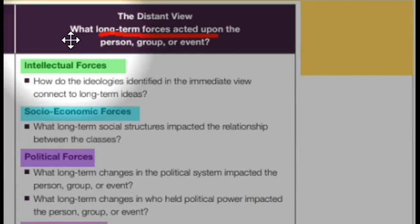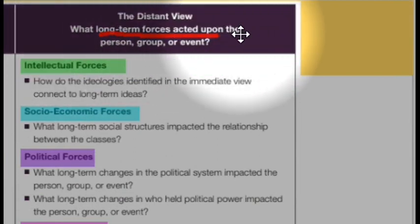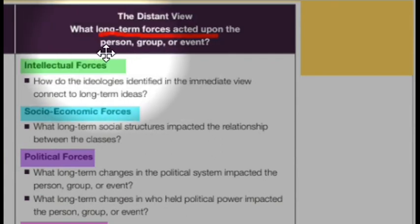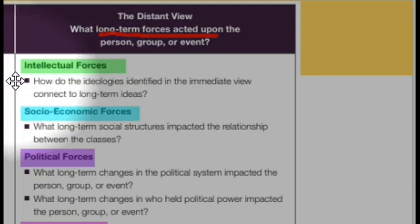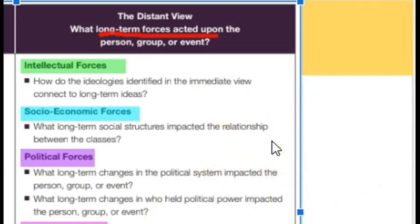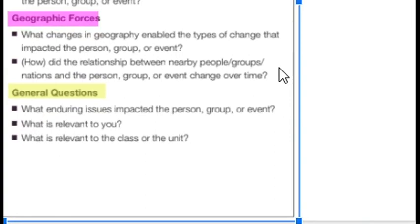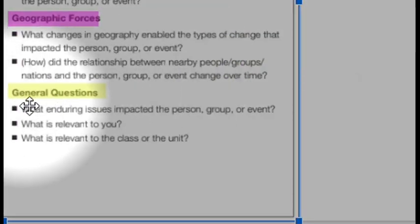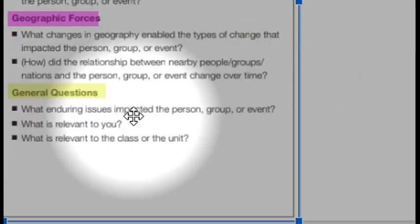Now, distant long-term forces mean you're going way back. I would say the immediate view covers roughly the few years before, while distant forces go at least 25 years back — that's my guesstimate. Intellectual long-term: how did people's long-term philosophies influence things? Socioeconomic: how did long-term economic structures influence things? Politics: long-term changes in political systems. And geographic: how did places, environments, and relationships play out over time? Then there's the general question — enduring issues, that social studies term your teacher drives you crazy about — how did that influence things?